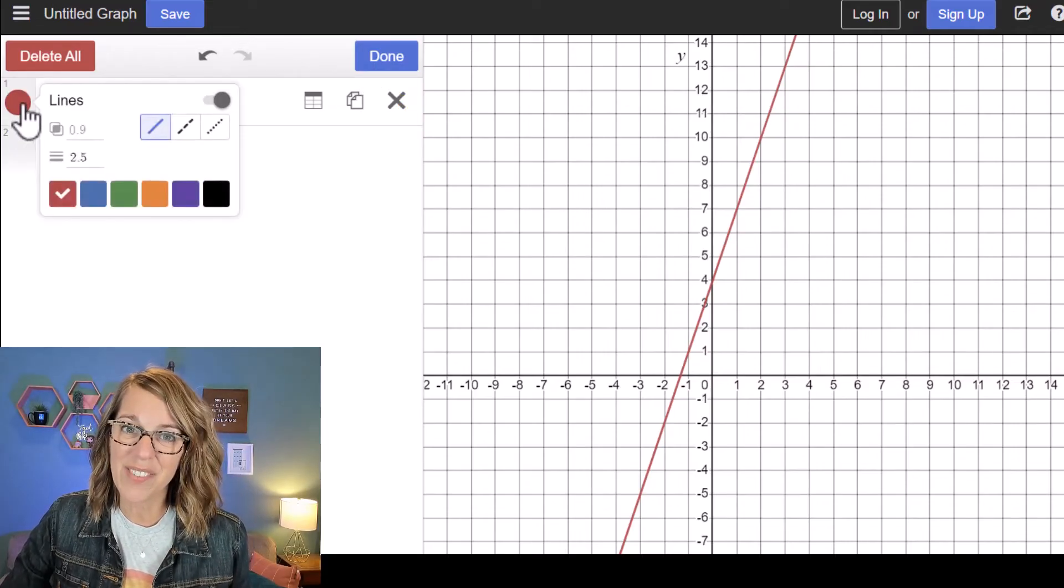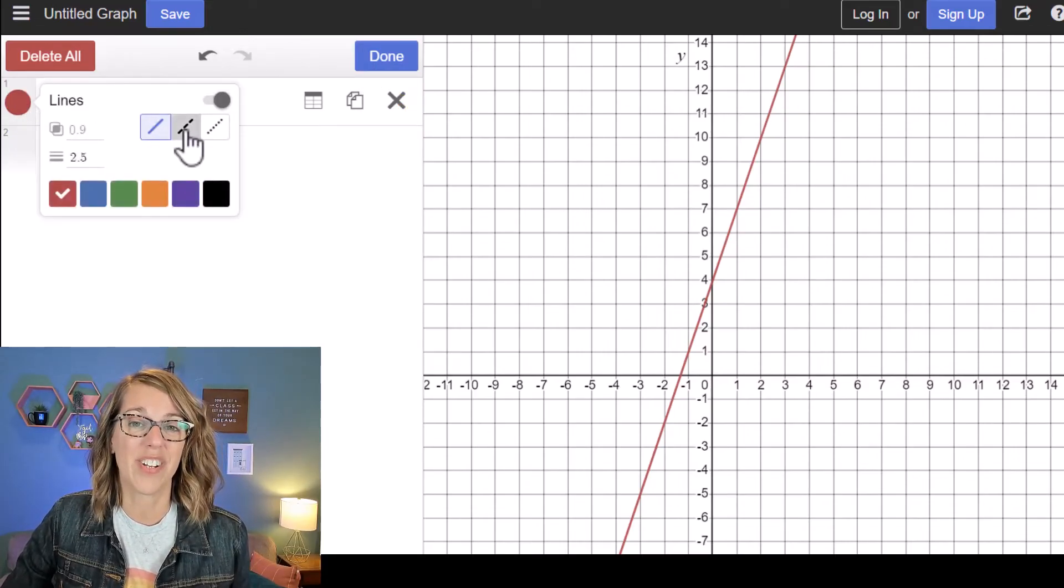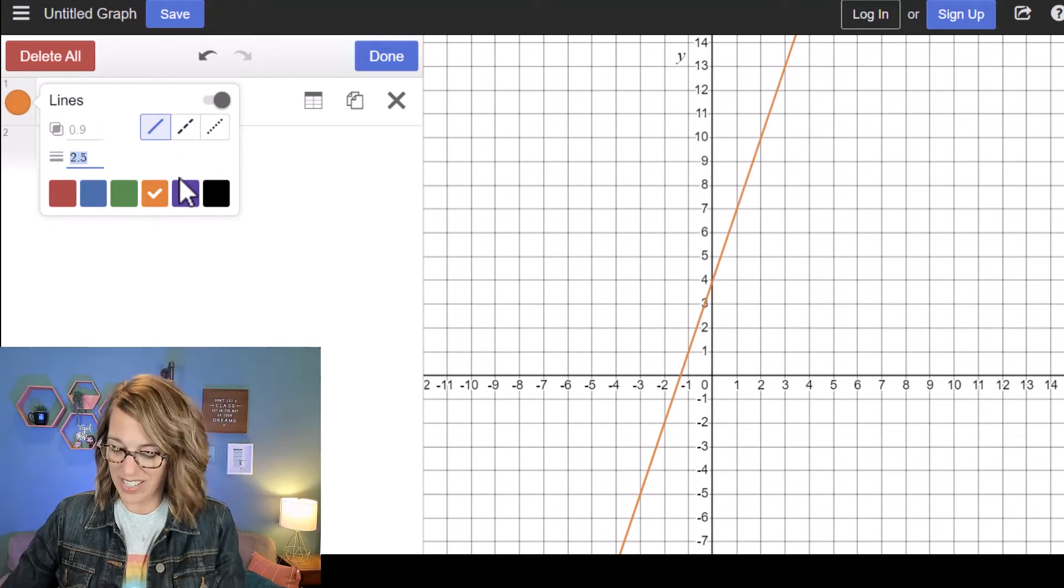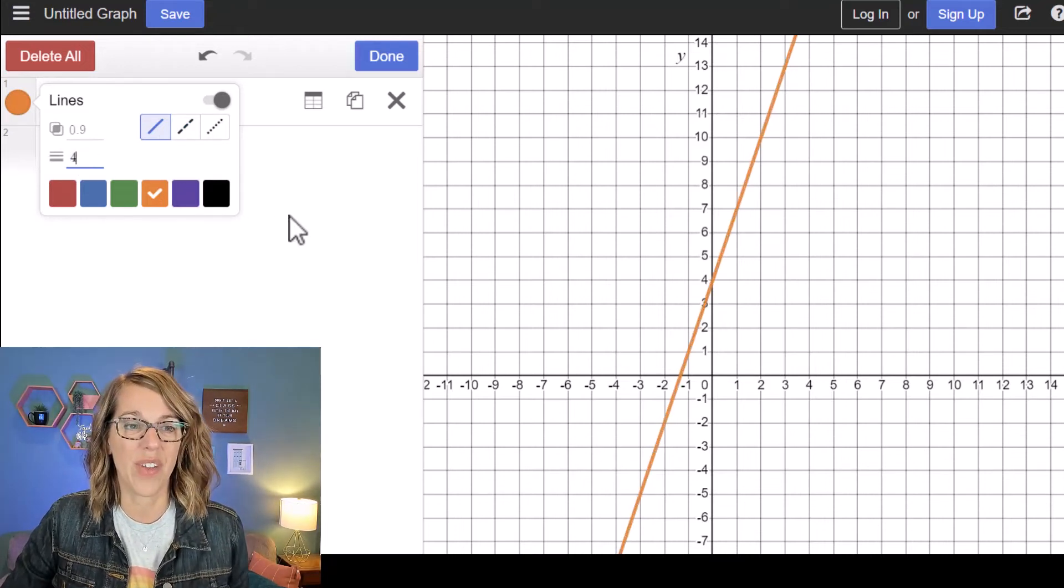Clicking on that circle again gives you some additional options. You can change this to a dashed line. I'm going to change it back. You can change the color and you can change the thickness. I'm going to change the thickness here to a 4.